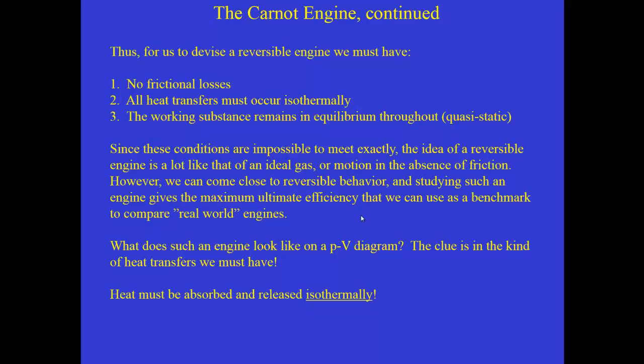So, here's where the rubber meets the road. We have to use Carnot's conditions to figure out what this cycle would look like on a PV diagram. And the main clue is in the kind of heat transfers that we have to have. All heat transfers have to occur isothermally, which means when heat comes in or is released, that has to happen along an isotherm. And so that is something that we can easily come up with on the next slide.